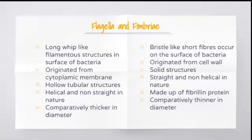What is the difference between flagella and fimbria? Flagella is a long whip-like filamentous structure on the surface of bacteria, originating from the cytoplasmic membrane. Whereas fimbria is a bristle-like short fiber that occurs on the surface of bacteria and originates from the cell wall.